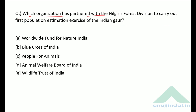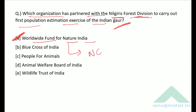Which organization has partnered with the Nilgiri Forest Division to carry out the first population estimation exercise of the Indian Gaur? For the first time, a population estimation of the Indian Gaur is being conducted. WWF — World Wide Fund for Nature India — has partnered with the Nilgiri Forest Division for this exercise.